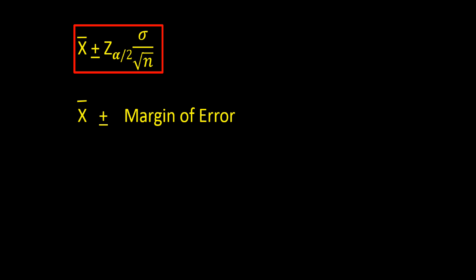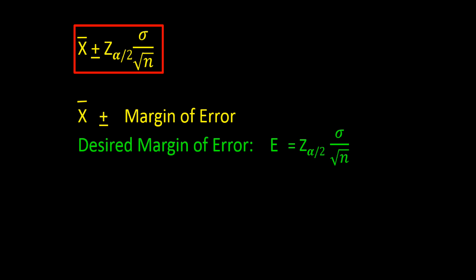So three components were used to determine the margin of error: the z value, sigma, and little n the sample size. Written as a formula, the desired margin of error, let's call it E, is equal to z subscript alpha divided in half times sigma over the square root of little n.